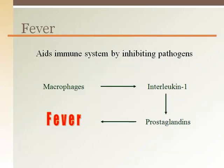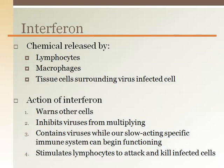Fever is a mechanism that our bodies use to inhibit bacteria or viruses from reproducing. Macrophages release chemicals that target our hypothalamus in the brain, which increases our body temperature set point like turning up the thermostat. Interferon is a protein chemical that interferes with viral development. It is released by lymphocytes, macrophages, and local tissues to inhibit viral replication and increase our immune response to that infected cell.